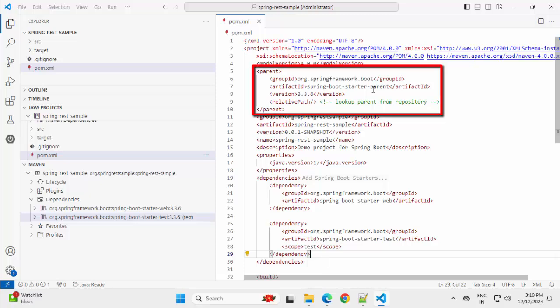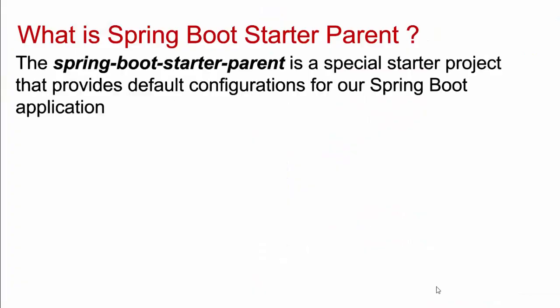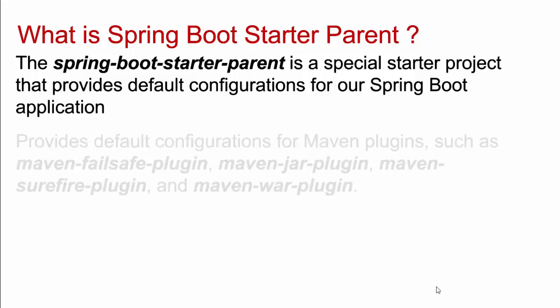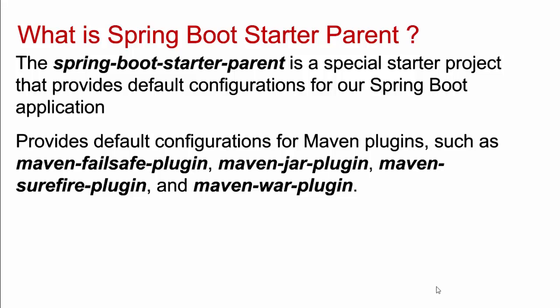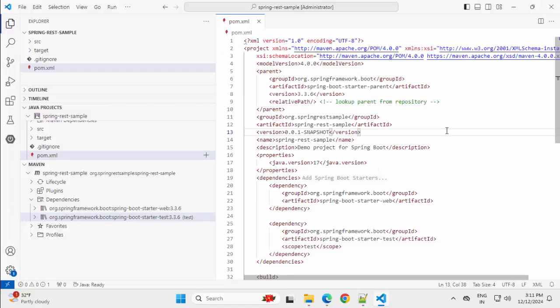Now we can discuss about Spring Boot Starter Parent. This Spring Boot Starter Parent is a special starter project that provides default configurations for our Spring Boot application — like Maven plugins such as Maven Failsafe Plugin, Maven Jar Plugin, Maven Surefire Plugin, War Plugin. All of these are included within this Starter Parent, so when we include this Starter Parent inside our project pom.xml, all these plugins and configurations are available. Let me press Ctrl and click over here.